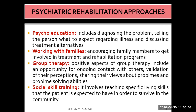Different approaches can be used in psychiatric rehabilitation. Psychoeducation includes diagnosing the problem, telling the person what to expect regarding their illness, and discussing treatment alternatives. Complete information about the psychiatric illness is provided to the individual suffering from it, or to family members. Psychoeducation is one of the main approaches of psychiatric rehabilitation.